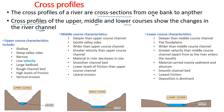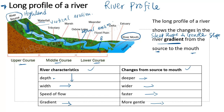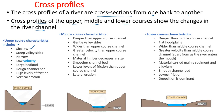The upper course characteristics include: it is shallow, has steep slopes, is narrow, has low velocity, and carries large bed load — large rocks and particles. It has a rough channel because erosion has not yet smoothed it, and a high level of friction due to the rough channel. Vertical erosion is dominant here.